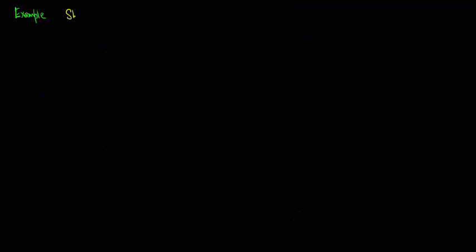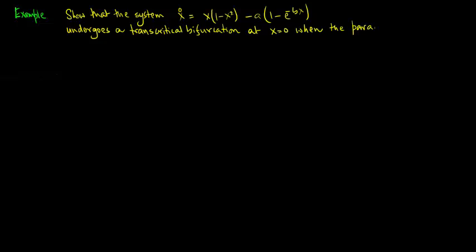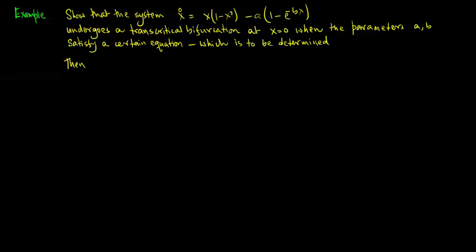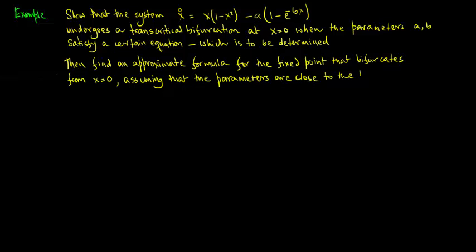Let's consider an example: show that the system x̊ = x(1 - x²) - a(1 - e^(-bx)) undergoes a transcritical bifurcation at x = 0 when parameters a and b satisfy a certain equation to be determined. Then find an approximate formula for the fixed point that bifurcates from x = 0, assuming the parameters are close to the bifurcation curve.